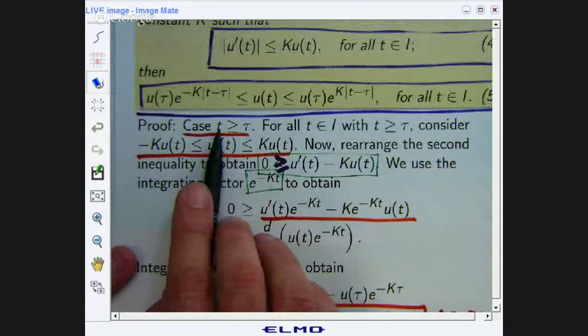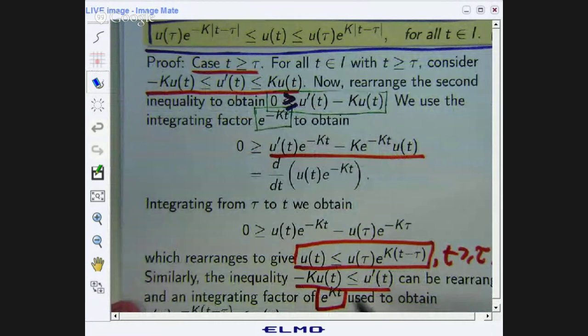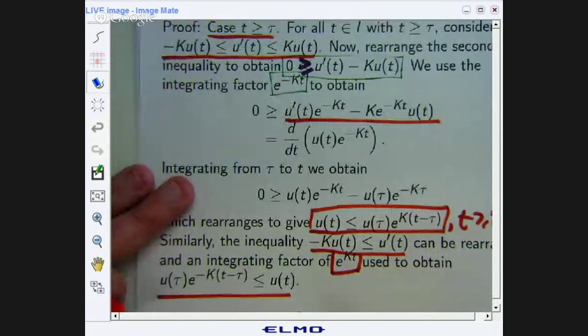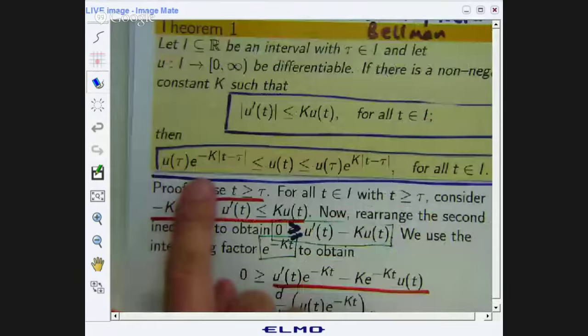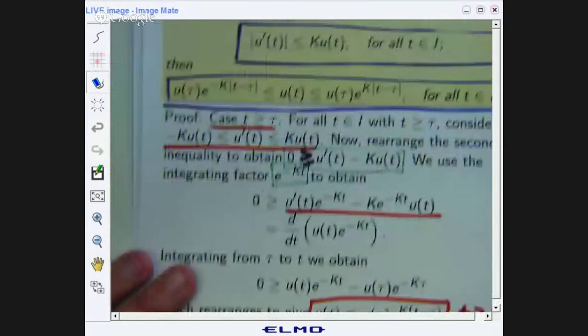So that agrees with this when t is greater than or equal to τ because the absolute values will disappear then. So we worked with this inequality. We're still working with the case where t is greater than or equal to τ. Let's work with this inequality now. And the idea is very similar. You start with this. You rearrange and you get an integrating factor of e^(Kt). And you get this sort of lower bound. So here you've got an upper bound. Here you've got a lower bound. And when you put those together, you get this for t greater than τ where the absolute values are removed.